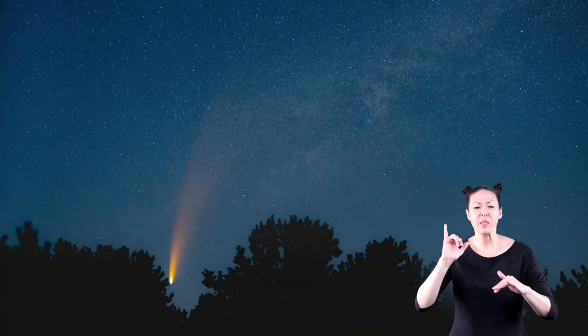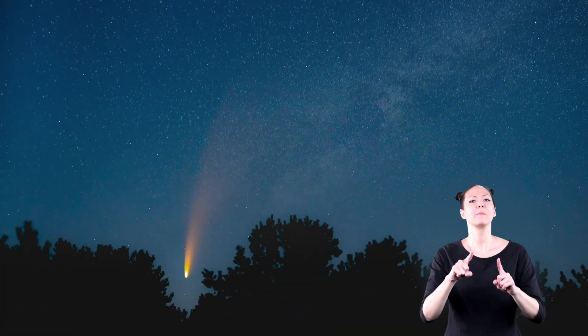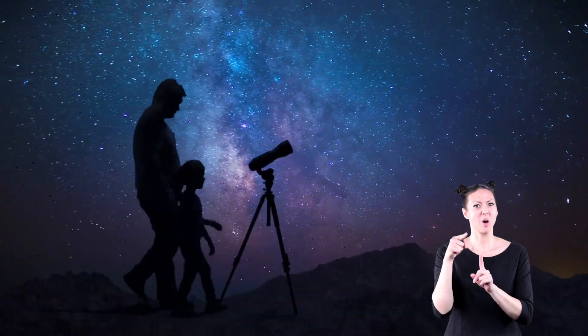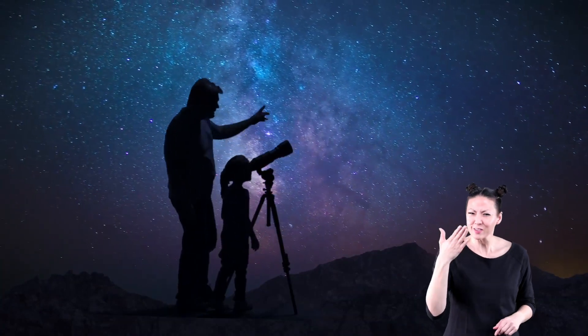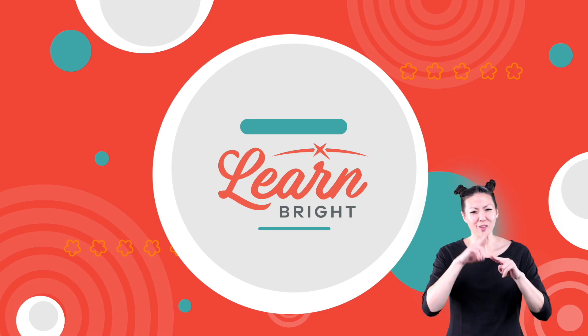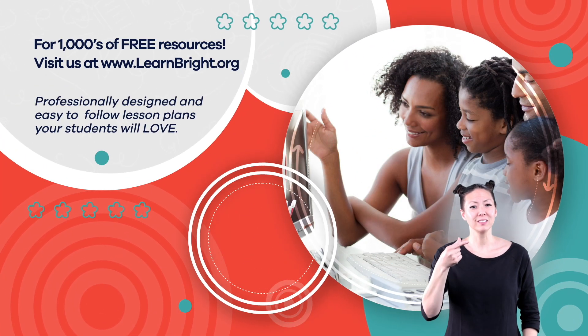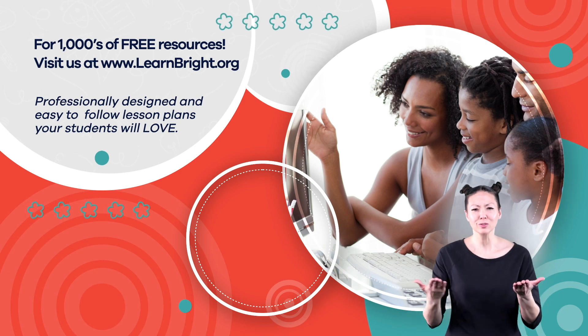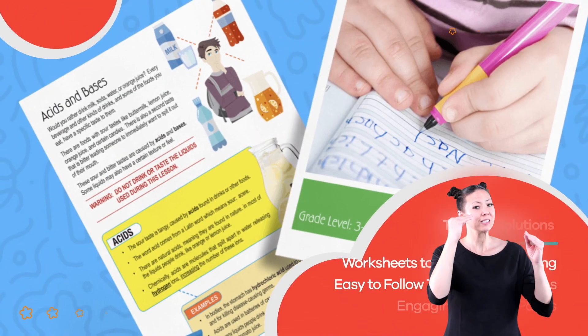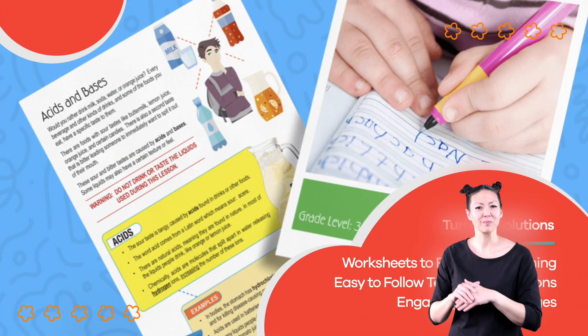A major comet that can be seen from Earth only happens about once every 5 to 10 years. So, when you hear about one, make sure you are there to see it. It will be worth the wait! Hope you had fun learning with us! Visit us at learnbright.org for thousands of free resources and turnkey solutions for teachers and homeschoolers.